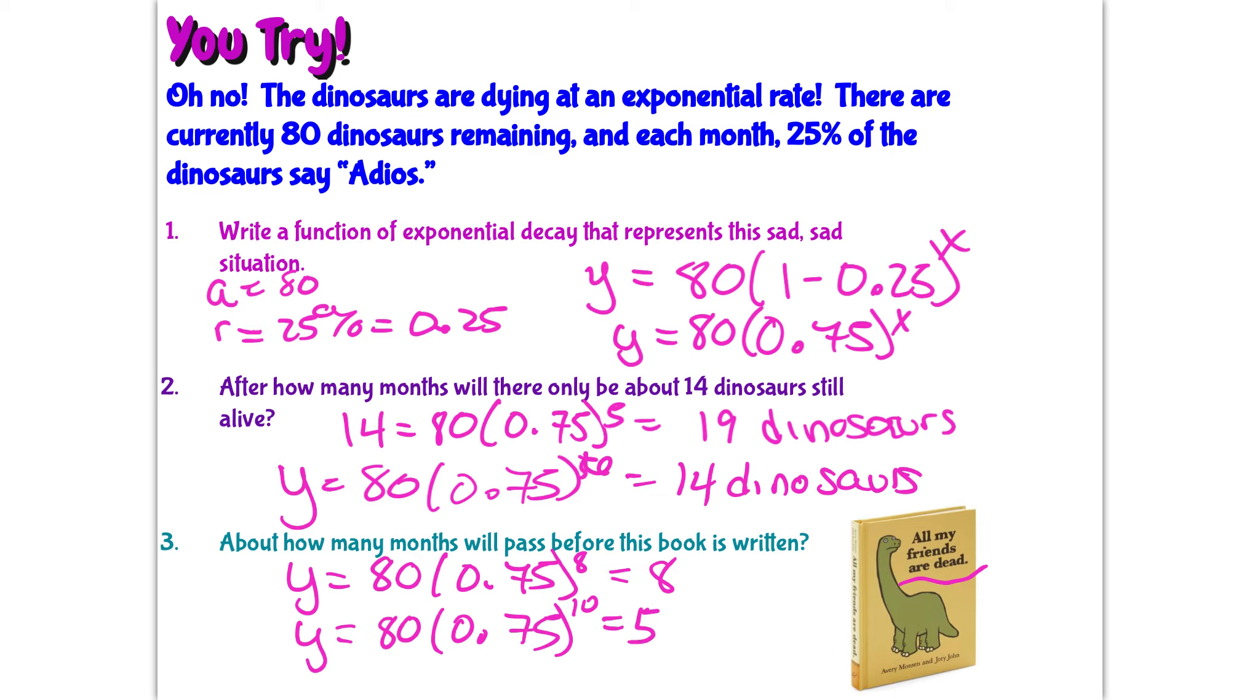So let's try the 12th power. There's still 3 dinosaurs left after 12 months. Let's try 13. Even after 13 months, there's still 2 dinosaurs left. So let's try 14 months. After about 14 months, 14 months till one dino left.